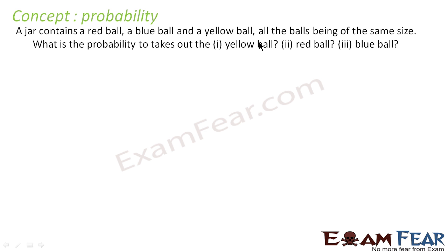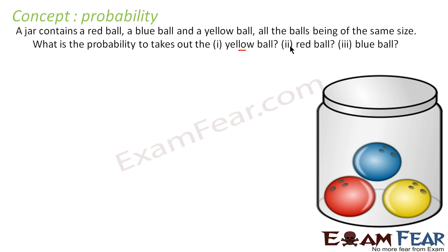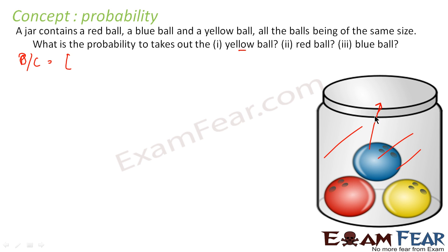Let's take another example. A jar contains a red ball, a blue ball, and a yellow ball, all the same size. What is the probability of taking out a yellow, red, or blue ball? Since all balls are the same size and the jar is covered, you cannot tell them apart by touch — so it is an equal probability event. When we take out one ball, the outcome can be red, blue, or yellow, giving three total outcomes.